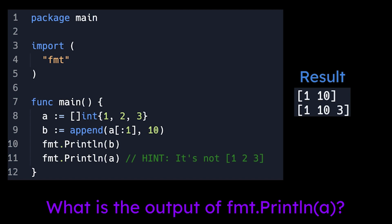B prints out 1, 10, and A is 1, 10, 3. I think about 36% of you got this correct. So again, by the end of this video, you'll have an understanding of why this answer is what it is.